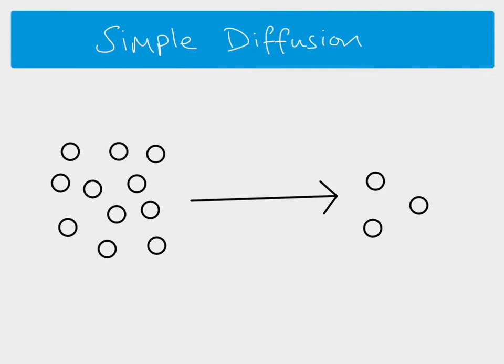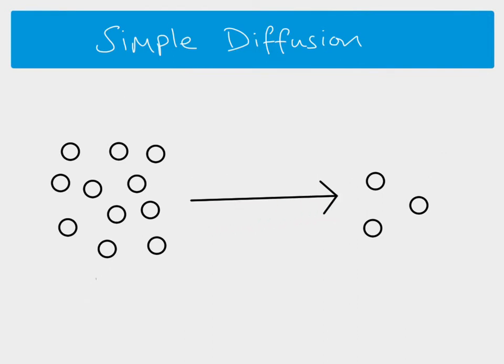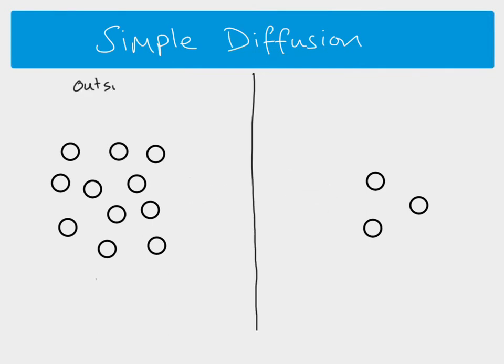Importantly, the particles don't know which way to go and they actually move randomly. So when we say from higher to lower concentration, we're talking about the net movement — the overall movement of particles will be in this direction. In biology, when we talk about diffusion we're usually talking about the movement into or out of a cell.